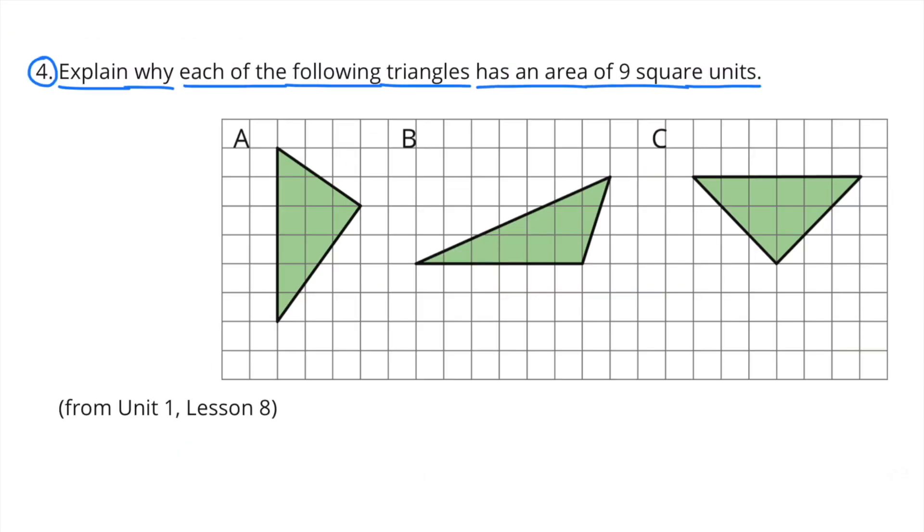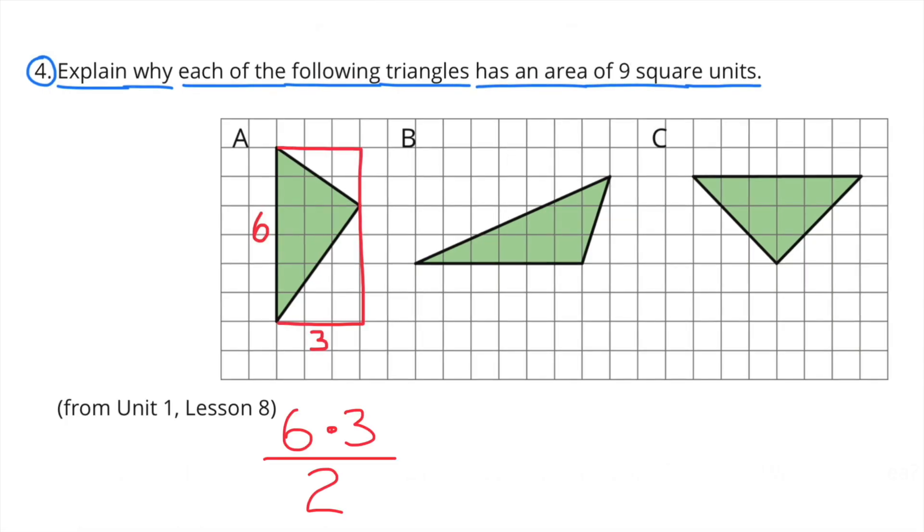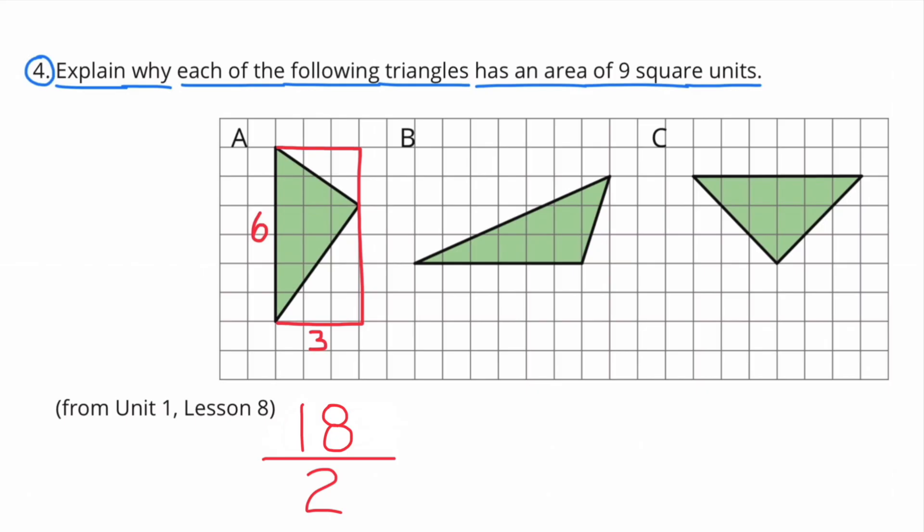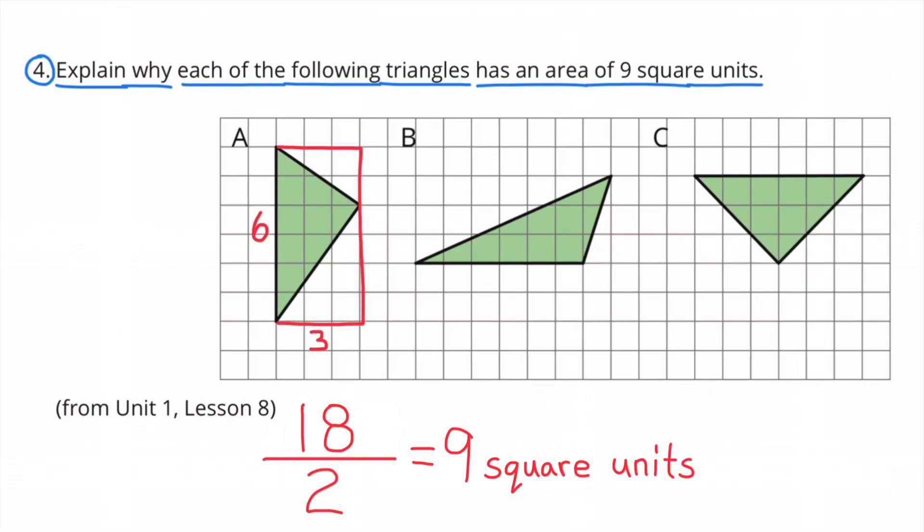Number 4: Explain why each of the following triangles has an area of 9 square units. Triangle A is going to be exactly half of its base times height, or half of 6 times 3. 6 times 3 is 18. 18 divided by 2 is 9 square units.